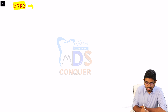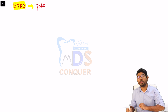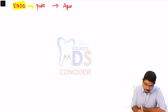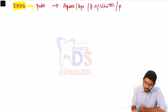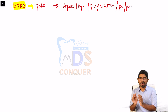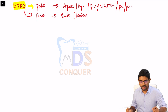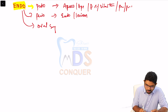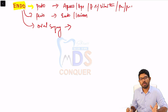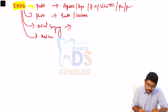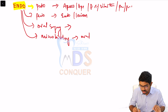Endo is integrated with Pedo contents — pediatric endodontics covers apexogenesis, apexification, pulp regeneration, vital pulp therapies, pulpotomies, and pulpectomies. Endo is also integrated with Oral Surgery through apexectomies, periapical surgeries, and micro surgeries. It's integrated with Microbiology through endodontic microbiology, which is part of oral micro. So Endo is linked to many subjects.